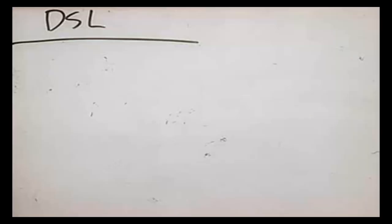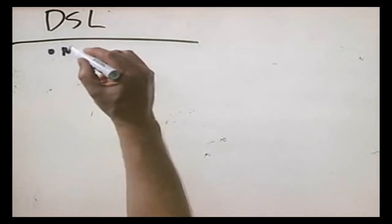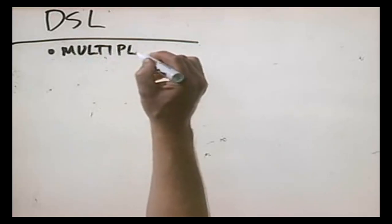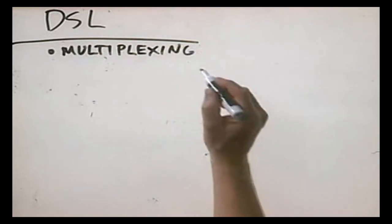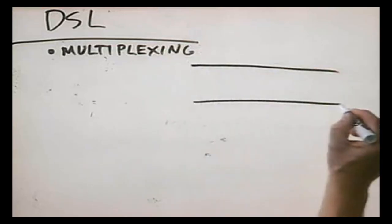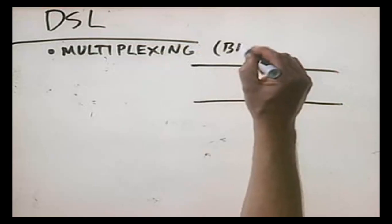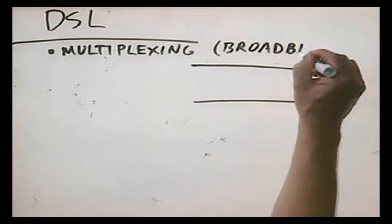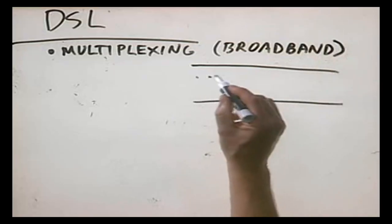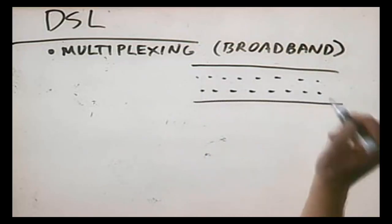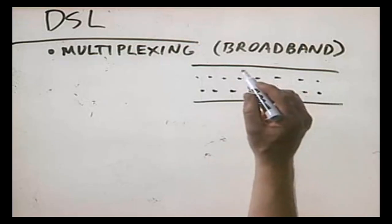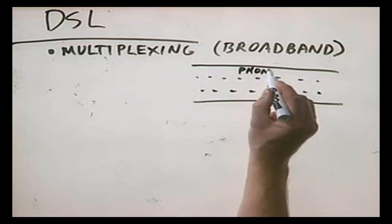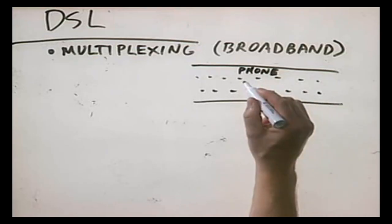DSL allows you to use the telephone and the internet at the same time, because DSL uses a form of multiplexing — also called broadband. We take that phone channel and divide it up into chunks. We now have several channels, and we can use part of it for phone and the other parts for DSL.